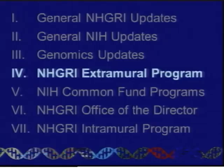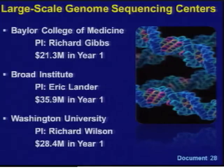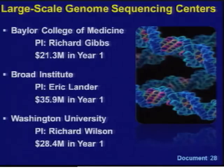Following the extensive council discussion about renewal of our genome sequencing program at the September meeting, we made final decisions and announced new awards in December. There are four major components: first, the large-scale genome sequencing centers renewed for four years at a year-one funding level of $86 million, with funded centers at Baylor College of Medicine, the Broad Institute, and Washington University. These centers will conduct research into how the human genome works, study genetic contributions to complex illnesses, support ongoing special projects such as the Cancer Genome Atlas, implement technological advances, develop new software for analyzing massive amounts of DNA sequence data, and continue to train genomic researchers.